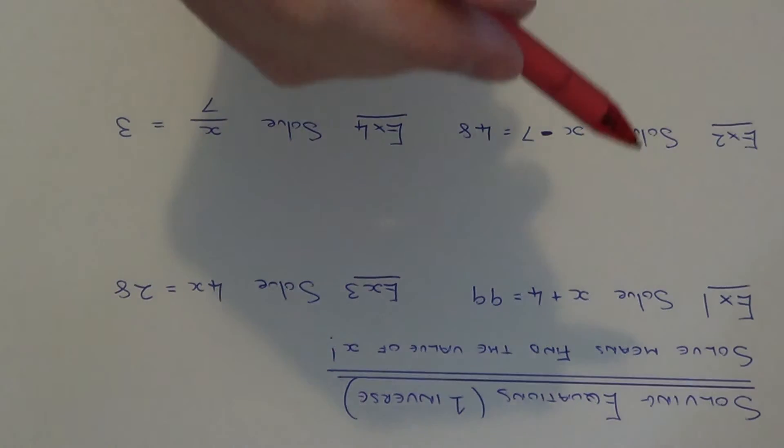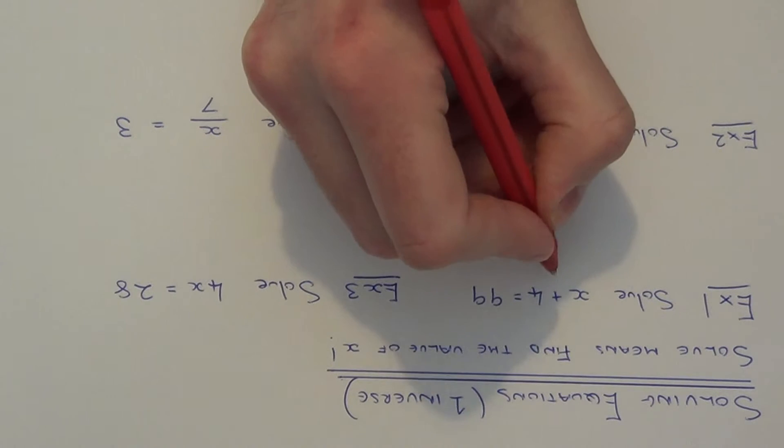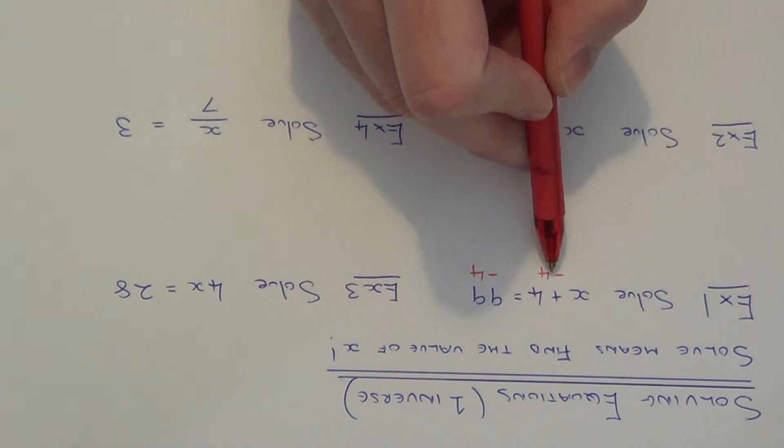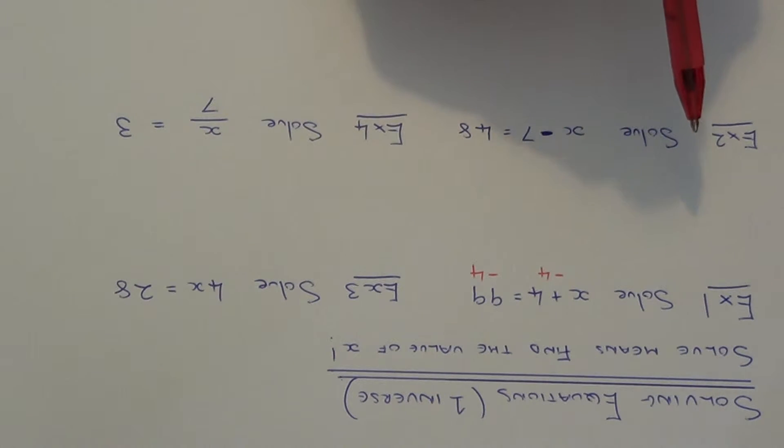So to solve this we just need to do the opposite to plus 4 which is minus 4. So we need to take away 4 from both sides of the equation.